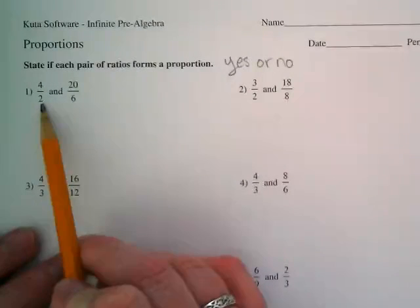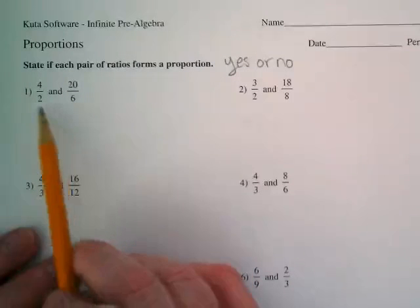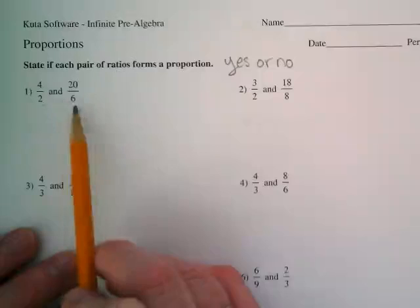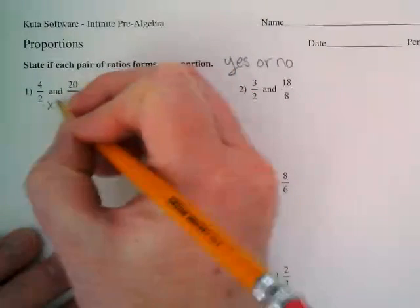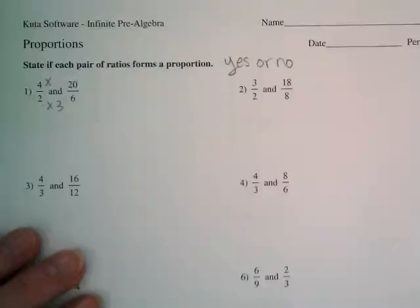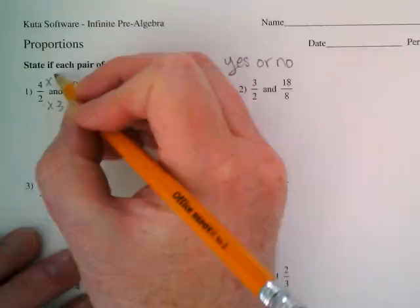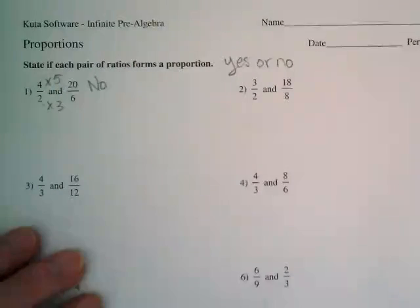When I look at 2 and 6 for this first denominator, what times 2 gets us 6? So this would be times 3, and this is not times 3 because 4 times 3 would be 12, and instead we have a 20 there. What's this times then? So this answer is no. Does that make sense?